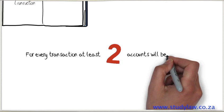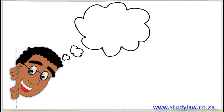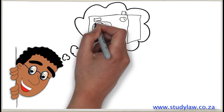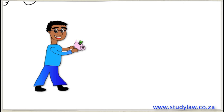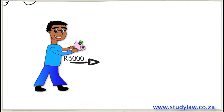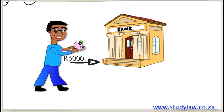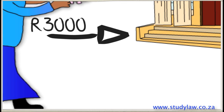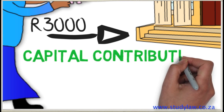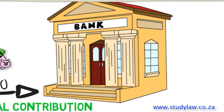Let's go back and look at Scenario A again. Seppo wants to start a photography business. He has R3,000 and he puts it into his business. This is called a capital contribution, which means that the owner of the business puts money or goods into the business. This money will be stored in the company's bank account.